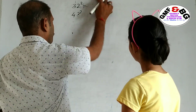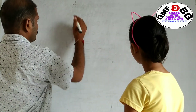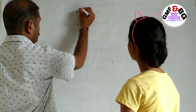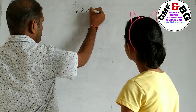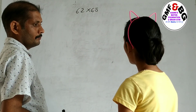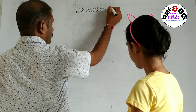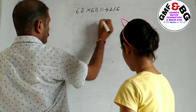All right, pick the top part. 62 into 68 equals 4216.